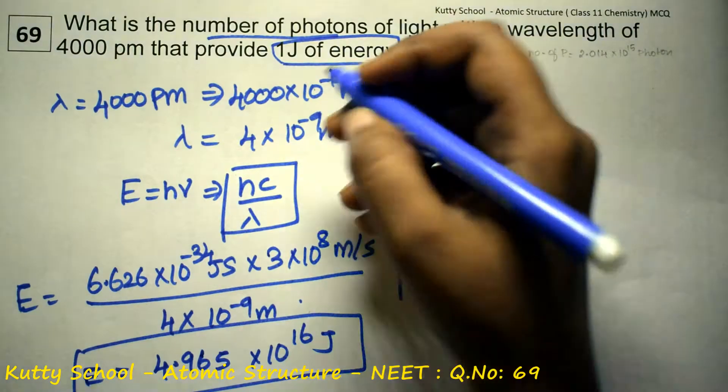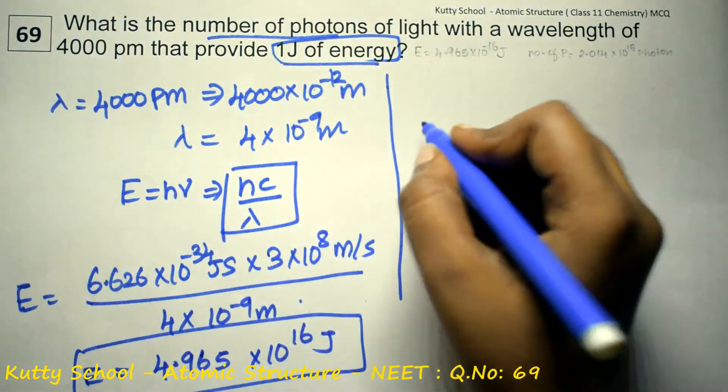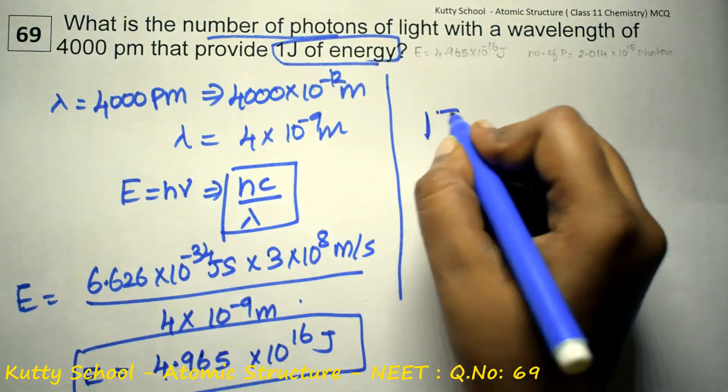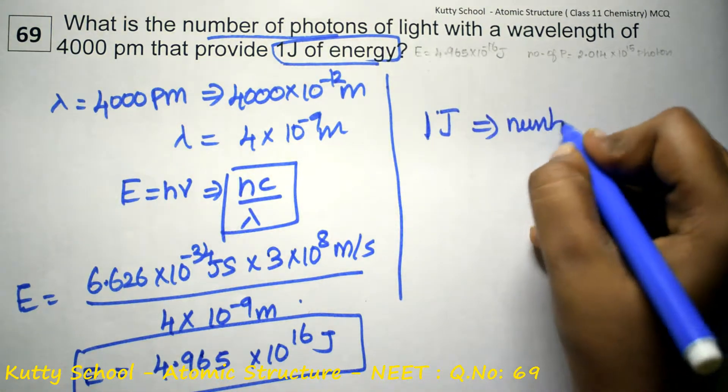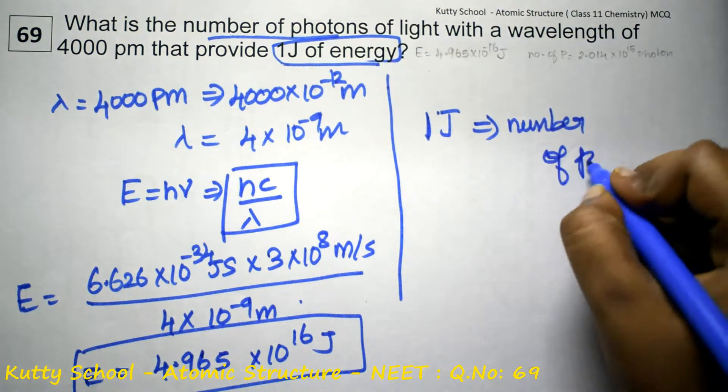So this is for 1 photon. So 1 photon has this much energy. Now we need to find how many photons for 1 joule. So number of photons, that's what we need to find.